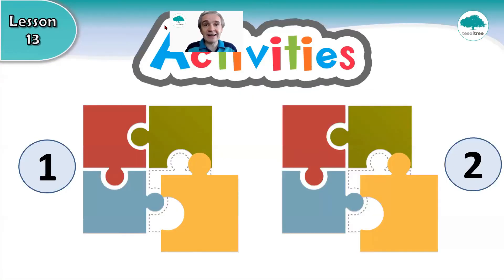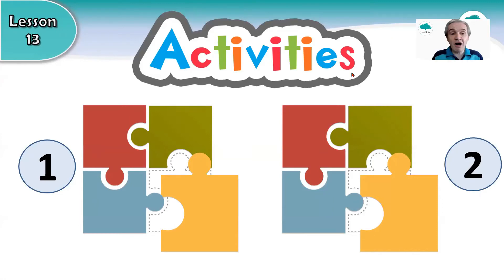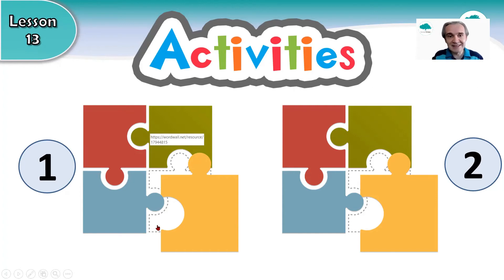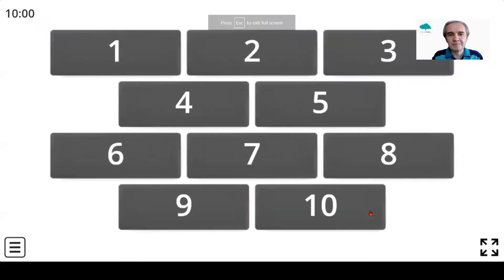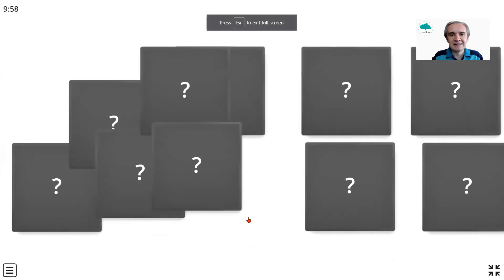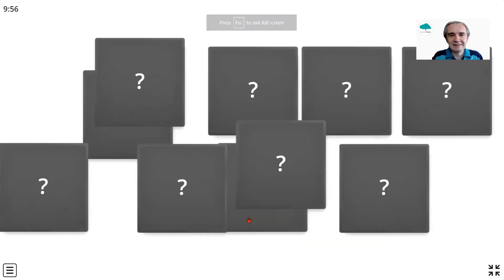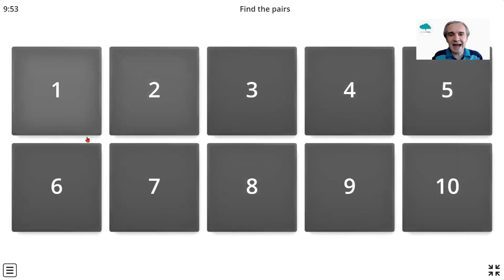So now it's time for our activities. For our online game today, we've actually got two games for you — one easy and one more difficult. So let's look at the easy one first. Remember the link for this will be online for you. It's a matching pairs game. Inside we have five sounds and five pictures we need to match together.